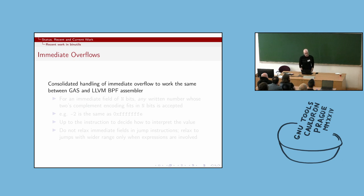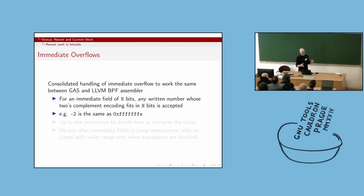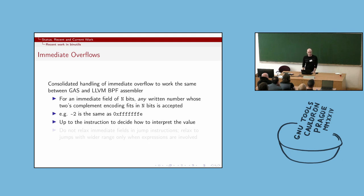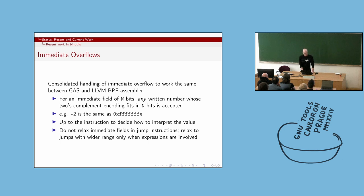Another big thing in the assembler was resolving an awkward difference in how overflows were handled between the original LLVM implementation and ours. We've worked with them to consolidate it: any immediate field whose two's complement fits will be accepted, leaving it up to the instruction to figure out what to do. That resolves some of the disparities between LLVM-compiled and GCC-compiled code. Also, with the new relaxation, we only relax expressions — not immediates.